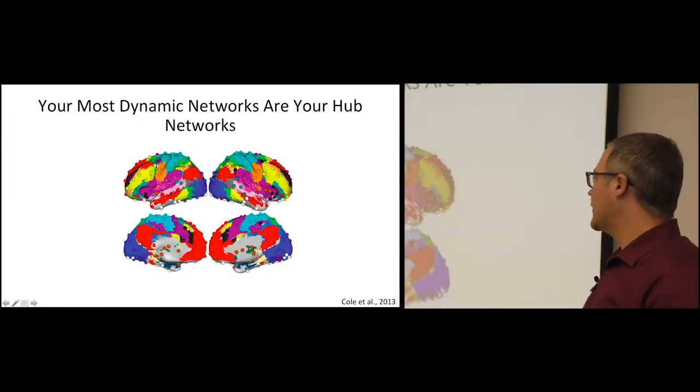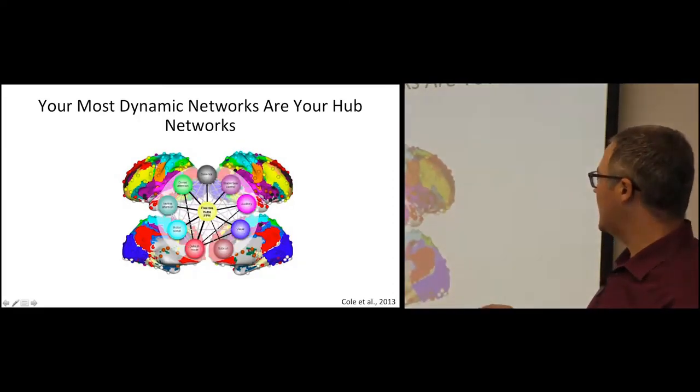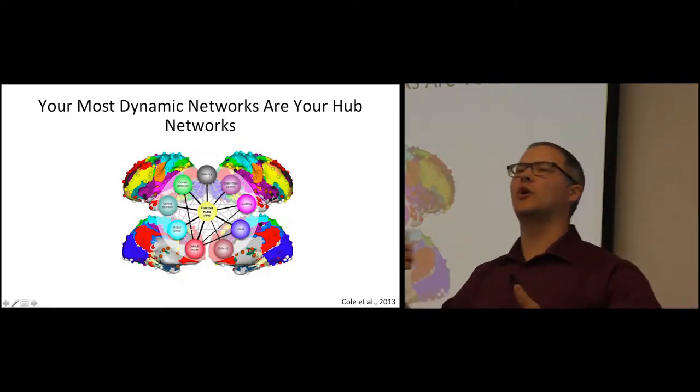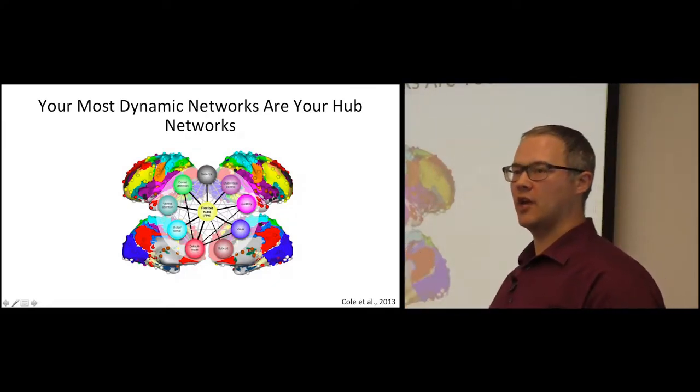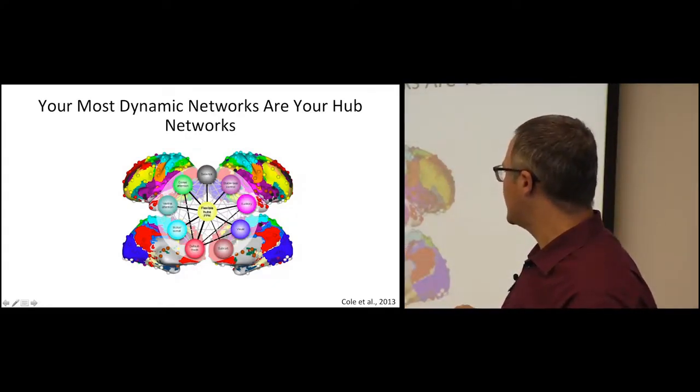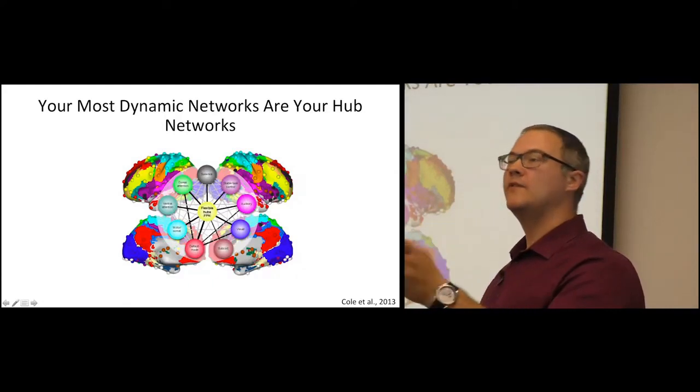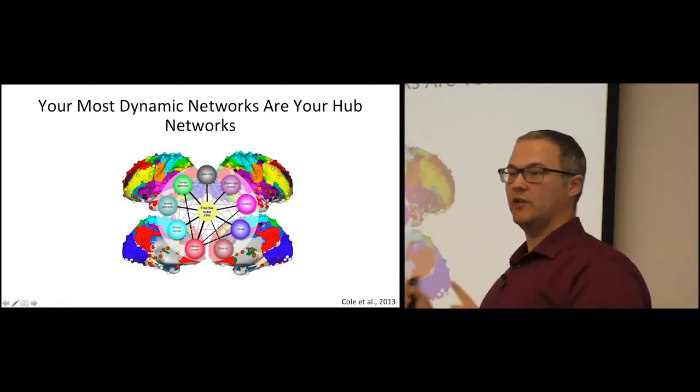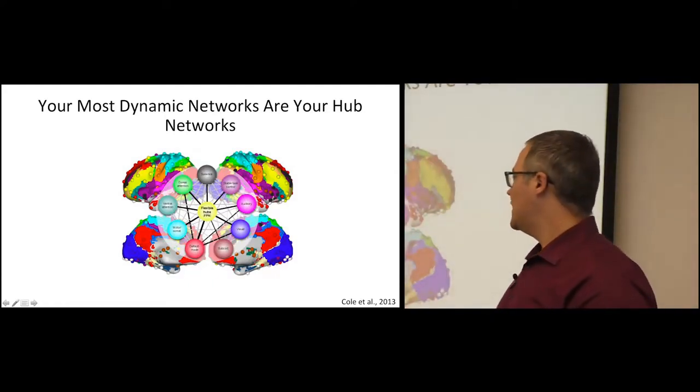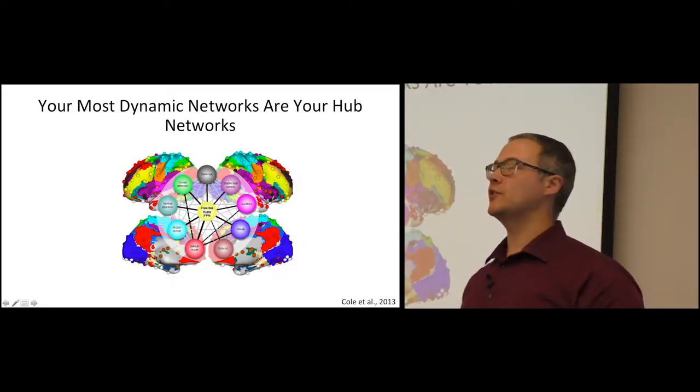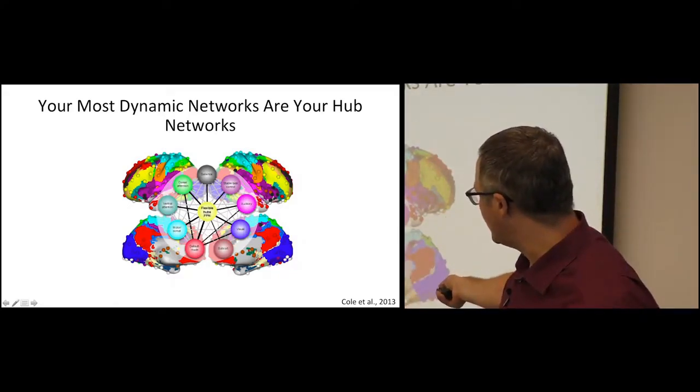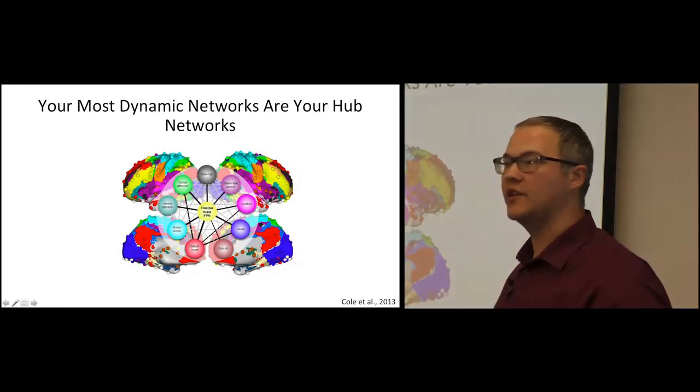Cole and colleagues some years ago showed that if I ask somebody to do all kinds of different tasks, having the same person switching from thing to thing while we're doing an fMRI scan, it turns out that not only is this network recruited a lot, this network changes its connectivity with everything else a lot. And indeed, people have gone to show, if I give people a stroke in this region or something that's right on the edge, these connector hubs between the communities, the entire system becomes dysfunctional.